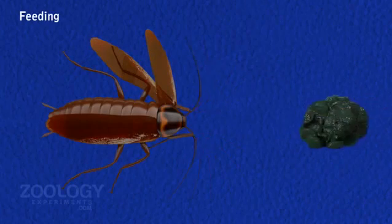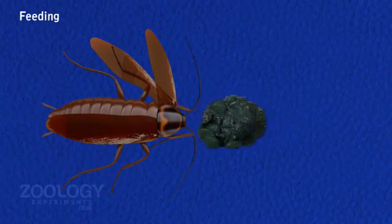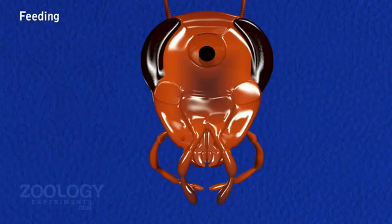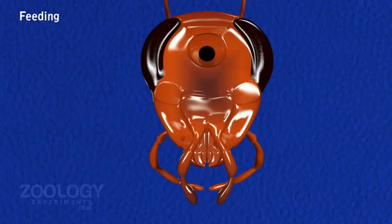Food is searched by the sweeping antenna, tested by maxillary and labial palps, and detained by the forelegs, labrum, and labium. During eating, mandibles undergo a sideways movement brought about by the action of the adductor and abductor muscles, and masticate the food into smaller and finer particles.